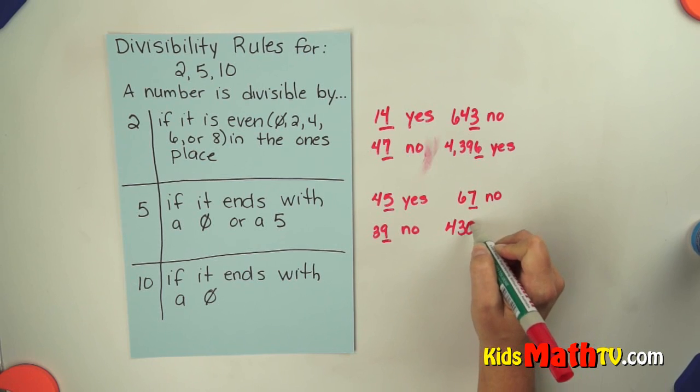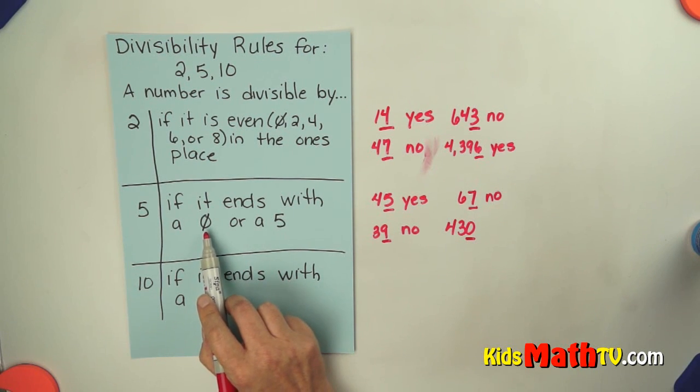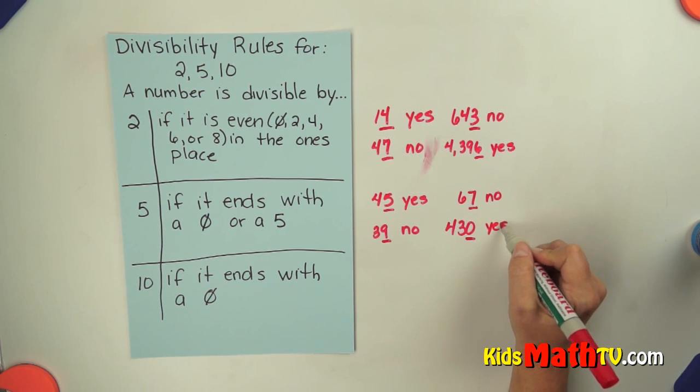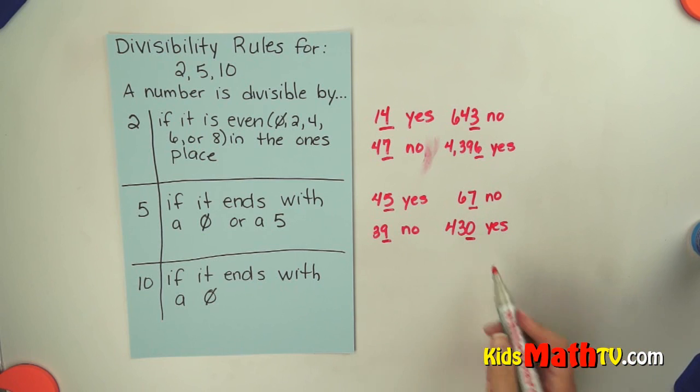How about 430? I look in the ones place. It is a 0. So if I divide 430 by 5, it will divide evenly by 5 and come out to an even number.